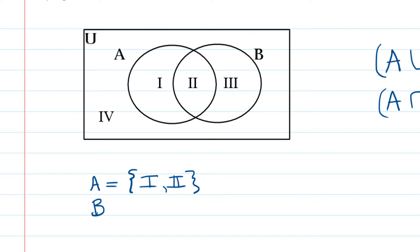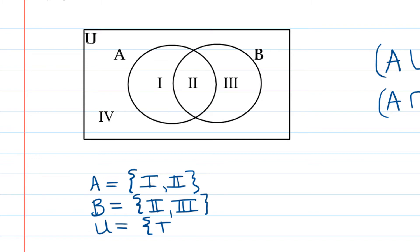B is the set containing Roman numeral II and Roman numeral III. And U, the universal set, contains all of the regions: I, II, III, and IV. I'm going to use these sets to demonstrate that DeMorgan's Laws are true.